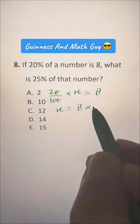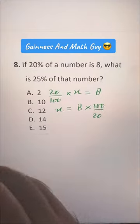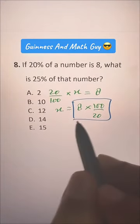So, 8 times 100 over 20. Now, this is that number X.